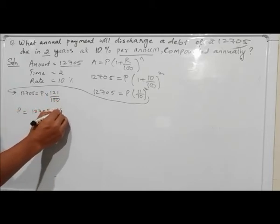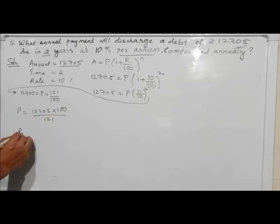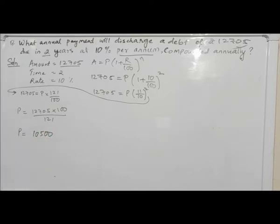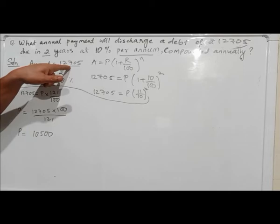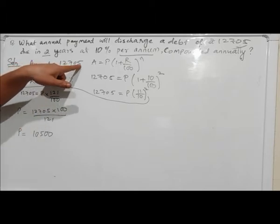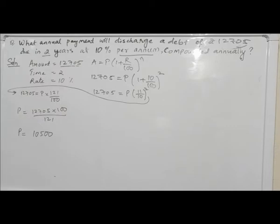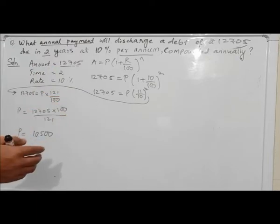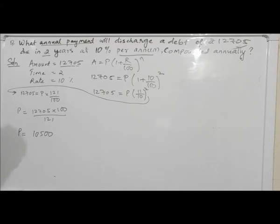P times 12705 into 100 by 121. This is the principle — 12705 equal to P times 121 by 100. So the principle of 12705 is to get to the power of 10 squared. This principle gives us 99, and the annual payment equals the annual payment.